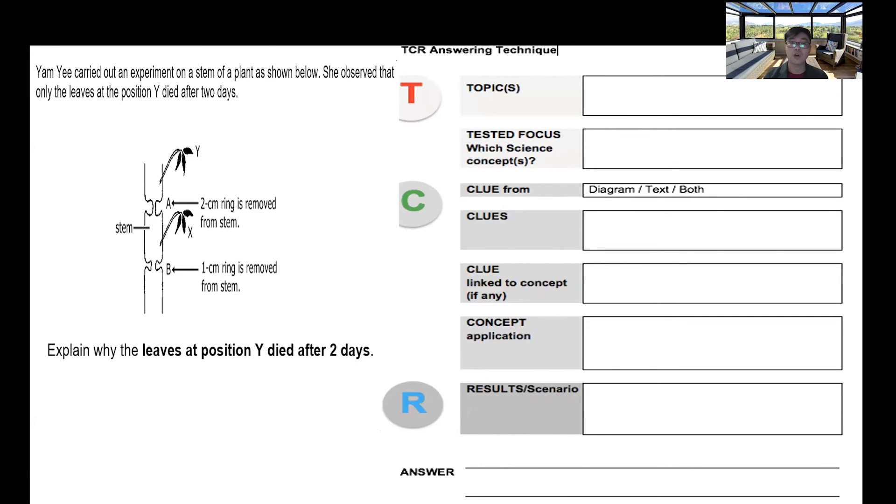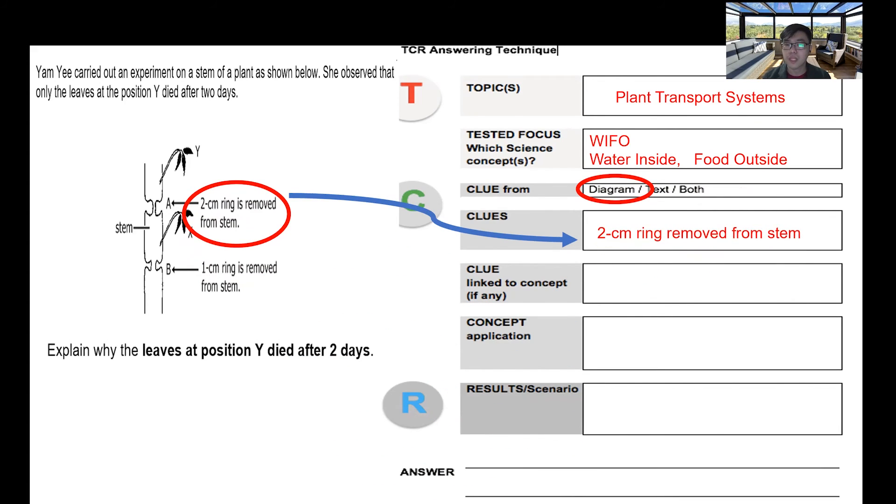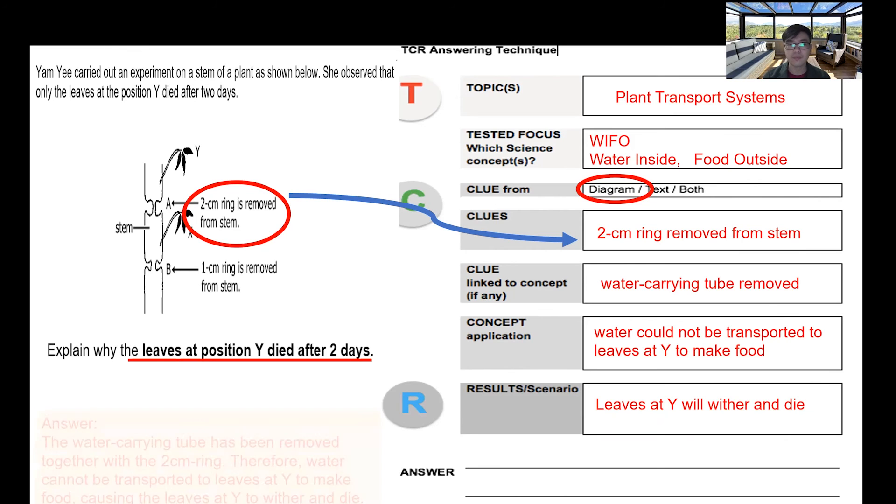Let's take a look at here. How do we apply the TCR answering technique? Basically, the topic that we are going to narrow down will be plant transport system. The test focus is that we must know the position of the water carrying tube and the food carrying tube: water inside, food outside - WIFO. The diagram itself shows it to us. The two centimeter ring is removed from the stem. Let's put it down into the clue. Then we link it back to the concept of water carrying tube being removed and water could not be transported to the leaf at Y to make food. Now if that is the case, therefore the leaf at Y will wither and die.